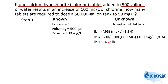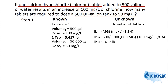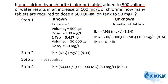Now that we know that, we can use this second set of numbers to calculate how many tablets. One tab is 0.417 pounds. We have a 50,000 gallon tank and we want to dose it to 50 milligrams per liter. So using that same formula, we take 50,000, divide it by a million, multiply by the desired dose of 50 milligrams per liter times 8.34 — and that gives us a total of 20.85 pounds.